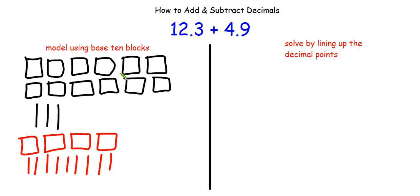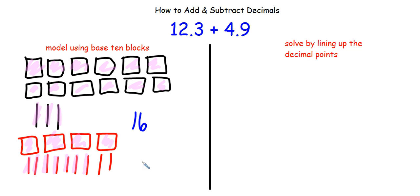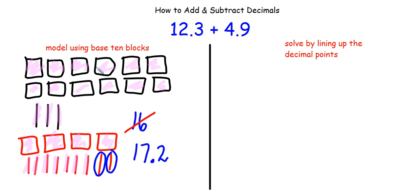I count all the wholes: 1, 2, 3, 4, 5, 6, 7, 8, 9, 10, 11, 12, 13, 14, 15, 16 — so I have 16 wholes so far. Now I put all the rods together — if we have 10, we have another whole. Counting: 1, 2, 3, 4, 5, 6, 7, 8, 9, 10. We have 10 rods, so we cross off 16 and turn it into 17. I see 2 rods left over, so that's 2 tenths. My answer to this problem is 17 and 2 tenths using the base 10 block model.